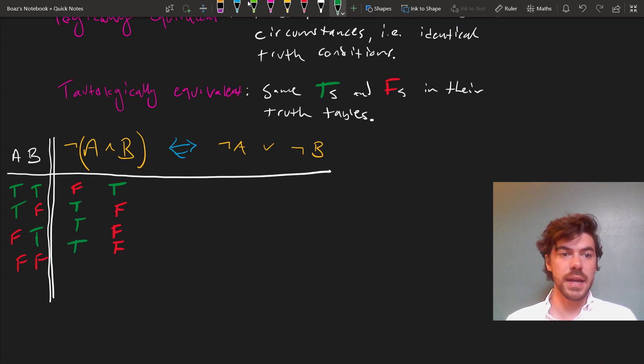Moving to the right-hand side, let's write out the values for not A and not B just to make this clear. Again, these are just flipped around A and B as they appear in the left-hand column here. Now in the first row, this connective will come out false because both not A and not B are false. But in the remaining rows, at least one of them is true, and so this disjunction will come out true.